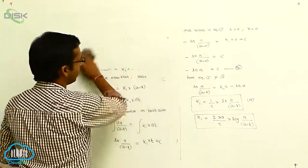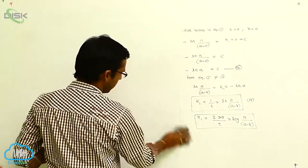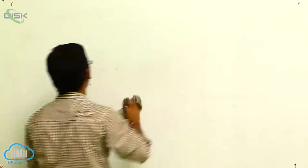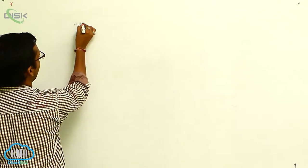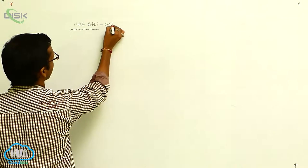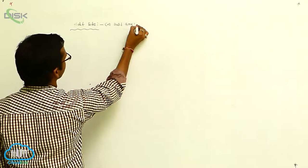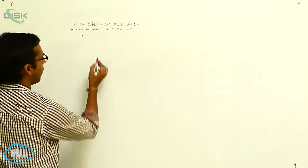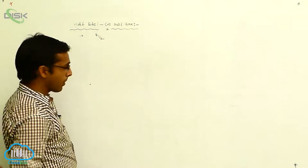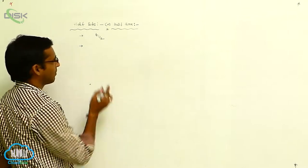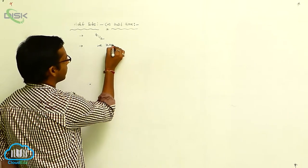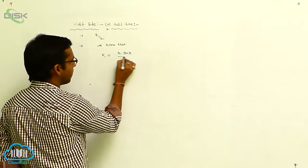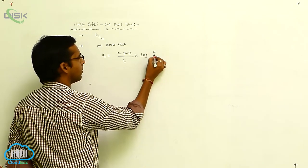Now, for this first order reaction, we will apply the concept of half-life. The first order reaction depends on half-time or half-life, denoted as T-half. The mathematical equation for first order reaction is K1 equal to 2.303 by T into log A by (A minus X).